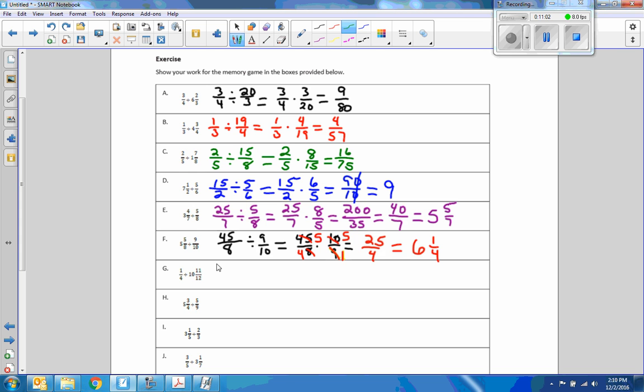This one, we're dividing a quarter. 12 times 10 is 120 plus 11 is 131 over 12. Take that one quarter and multiply by 12 over 131. Four goes into four once, four goes into 12 three times. One times three over one times 131. Three over 131, that will not reduce.